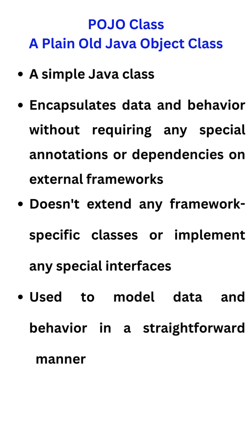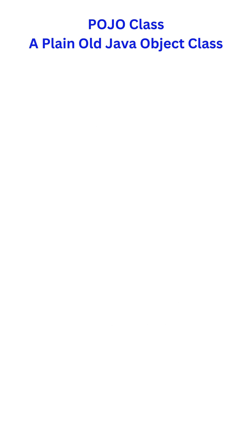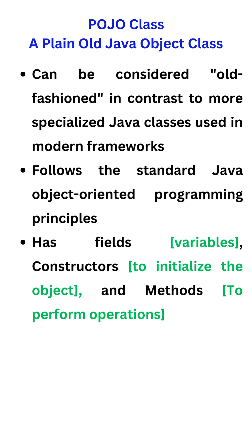A POJO class can be considered old-fashioned in contrast to more specialized Java classes used in modern frameworks. It follows standard Java object-oriented programming principles and has fields, constructors, and methods.